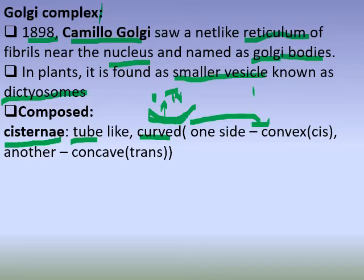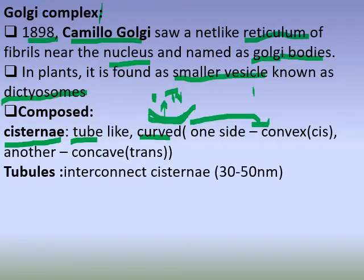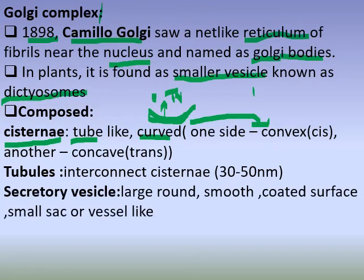The Golgi Complex has a convex face and a cis face. The tubules are interconnected, measuring 30 to 50 nanometers. Secretory vesicles are already present in the endoplasmic reticulum. These vesicles are large with a smooth wall.